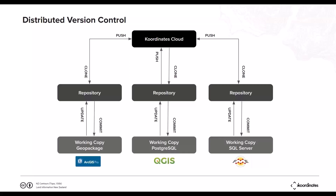Once you've got the repo, the data will be sitting in a working copy. The default working copy we've gone with is GeoPackage, due to the fact that it's somewhat vendor agnostic — meaning open source folk can work on it, ESRI folk can work on it, FME folk can work on it. We also support RDBMS styles: Postgres, SQL Server, and MySQL. The way it works is your ESRI user pulls the data down, makes edits, updates their local repository, and pushes back up to the Coordinates Cloud — at which point any other users who pull that same repo down will benefit from the edits.